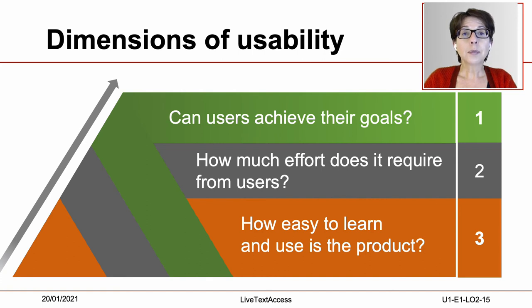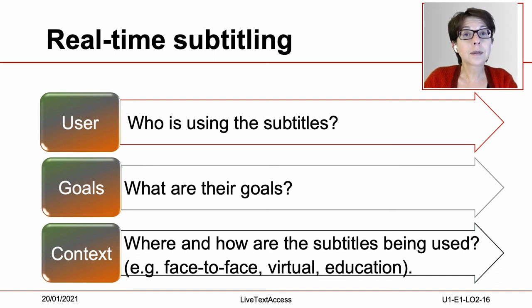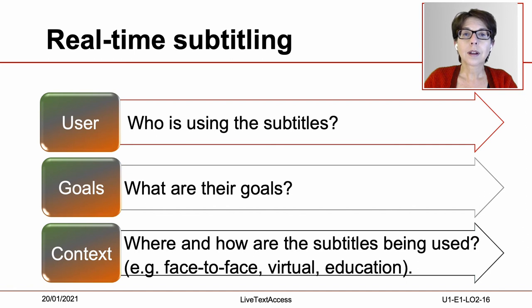Real-time subtitlers can improve the usability of their texts by asking themselves these questions before the job. First, who are the users and their needs, and what level of expertise do they have? Also, do I as a real-time subtitler have the level of expertise needed? Another question would be: what are the goals of the users? What do they want to achieve? How can subtitles help them to achieve these goals? Lastly, the context: what specificities does the context have? What problems may the users or real-time subtitlers face in this context? What type of subtitling is called for?